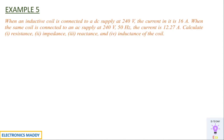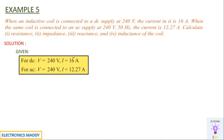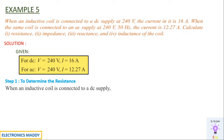Example five: an inductive coil is connected to a DC supply of 240 V; the current is 16 A. The same coil is connected to an AC supply of 240 V, 50 Hz; the current is 12.27 A. Calculate resistance, impedance, reactance, and inductance of the coil. Write the given DC and AC supply voltages and currents.